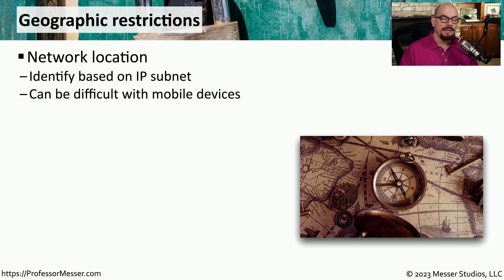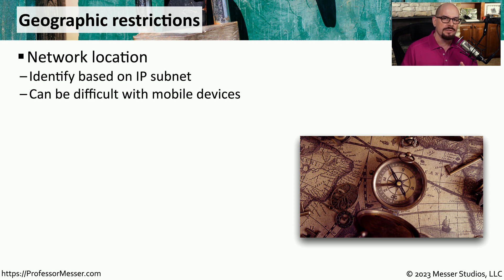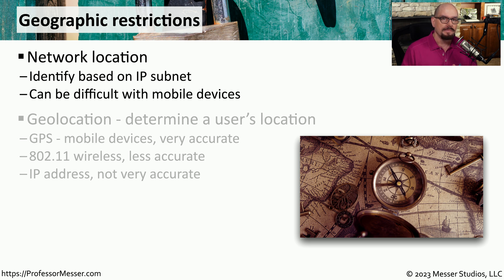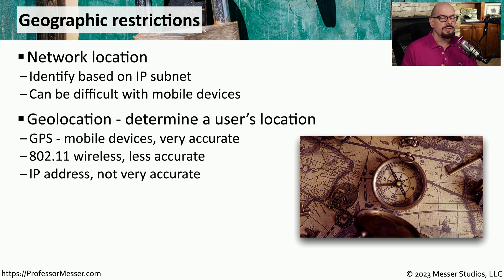This might be relatively accurate if someone's connected to an internal private network where we know exactly where those subnets might be. But wireless devices are much more difficult to determine location based on an IP subnet, because those mobile phones and tablets could be located virtually anywhere. For those devices, we might want to provide some additional checks of where a person might be using geolocation.